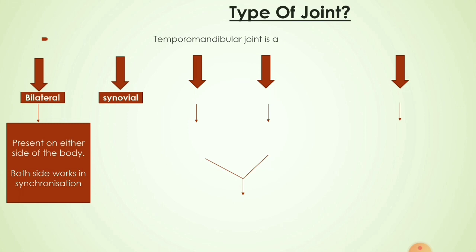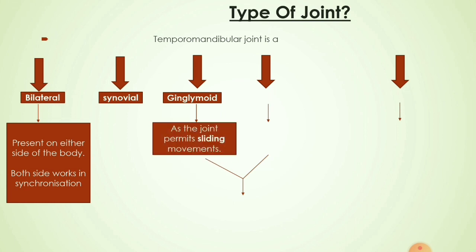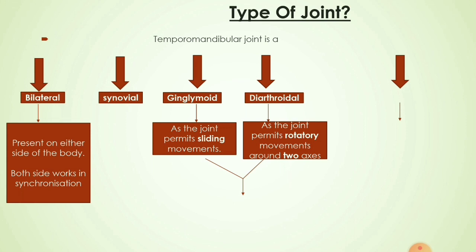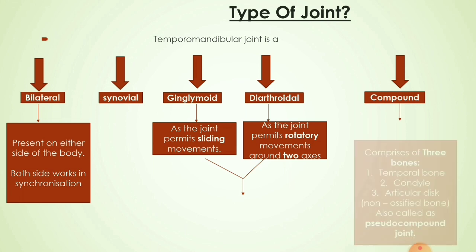Thirdly, it is a ginglymoid joint because the joint permits sliding movements. It is also a diarthrodial joint because the joint permits rotatory movements around two axes — the first axis is the hinge axis, whereas the second axis passes through the lingula of the mandible after translation.